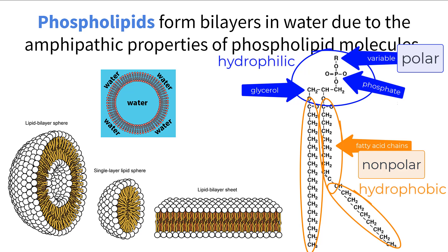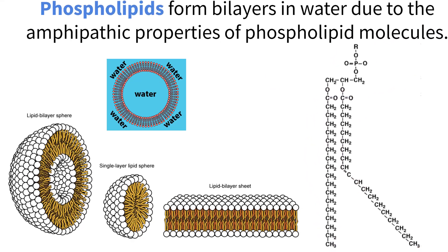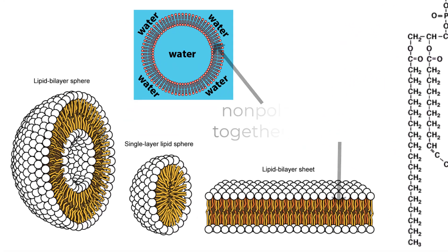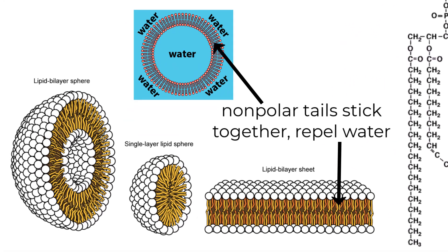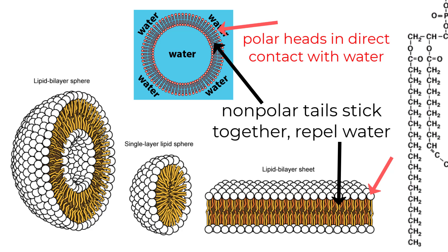Because the entire phospholipid has regions that are polar and nonpolar, we can say the molecule is amphipathic. This difference in polarity within different regions of the molecule allows interesting formations to take shape when many phospholipids are in the presence of water. What happens is the nonpolar tails of the molecules tend to stick together, repelling any polar water molecules. This leaves the polar heads openly in contact with the water, which is fine because their unbalanced charges allow it.